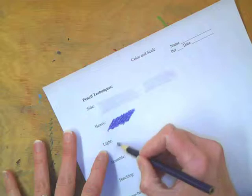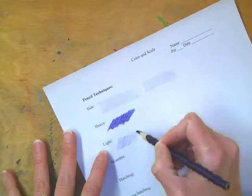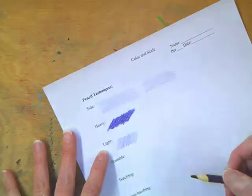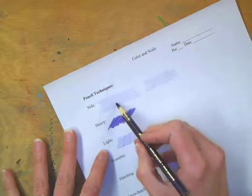Light is using the tip again, and you're just lightly coloring it in. You should be able to see lines on here. No lines back up here on the side though.